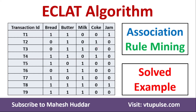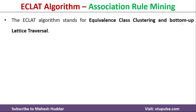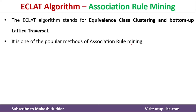Welcome back. In this video, I will discuss the Eclat algorithm, a type of association rule mining, with a simple solved example. Eclat algorithm stands for Equivalence Class Clustering and Bottom-Up Lattice Traversal. In association rule mining, we have multiple algorithms like Apriori, FP-Growth, and Eclat. Eclat algorithm is one of the popular association rule mining algorithms.